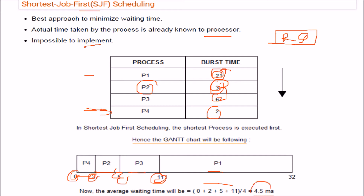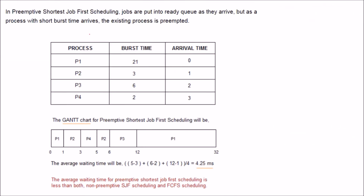The average waiting time is 0 + 2 + 5 + 11 divided by 4, which equals 4.5 milliseconds — much better than FCFS. We can also have preemptive SJF scheduling, where jobs are put into the ready queue as they arrive, but as soon as a process with the shortest burst time arrives, the existing process is preempted. The table now includes an arrival time column alongside burst times.